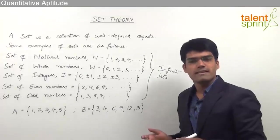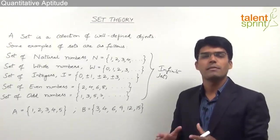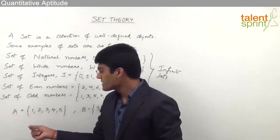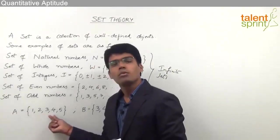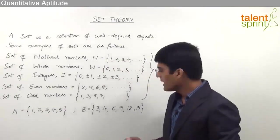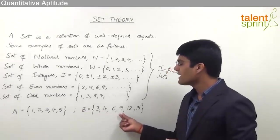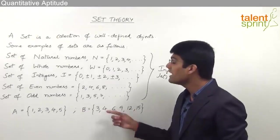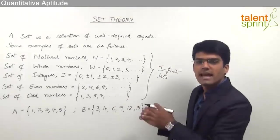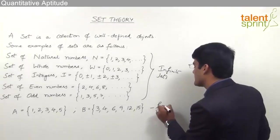Apart from infinite sets, the other type are finite sets, where the number of elements is finite. For example, set A has the elements 1, 2, 3, 4 and 5 — only five elements. Likewise, set B has the elements 3, 4, 6, 9, 12 and 15 — six elements. So these two are referred to as finite sets as they have a finite number of elements.